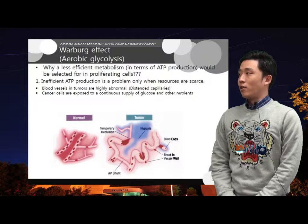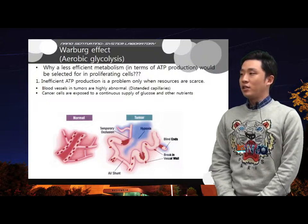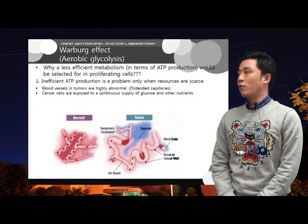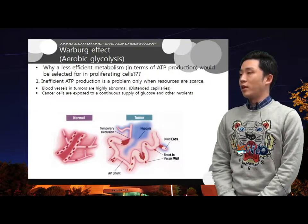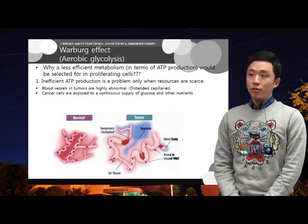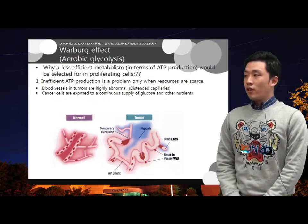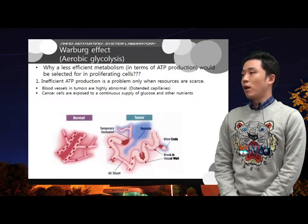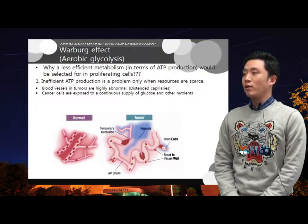Then why would a less efficient metabolism be selected for in proliferating cells? There are two reasons. First, inefficient ATP production is a problem only when resources are limited.